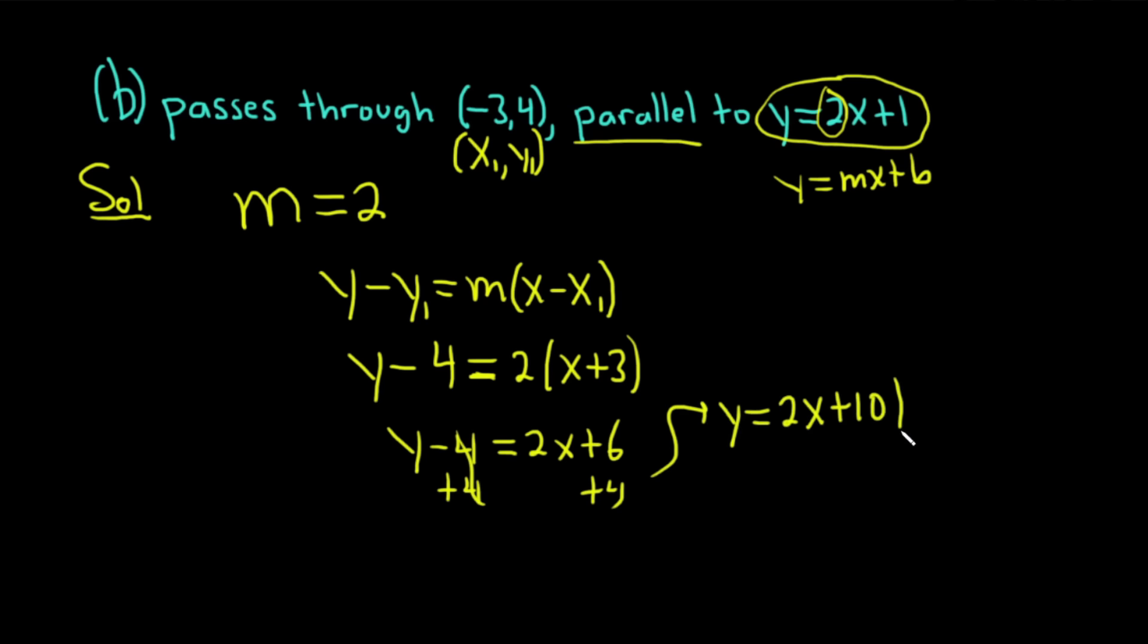And so that would be the equation of the line that passes through the point (-3, 4) that is parallel to y equals 2x plus 1. Again, we're given a point. We know parallel lines have the same slope. This line has a slope of 2. Therefore, our line has a slope of 2. And we just use the point slope form of a line to figure out the answer.